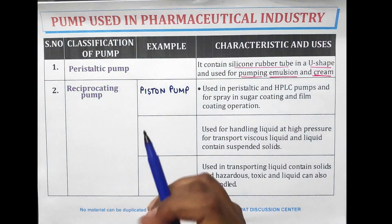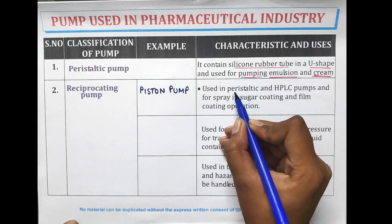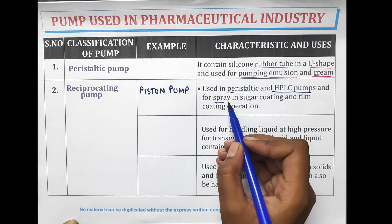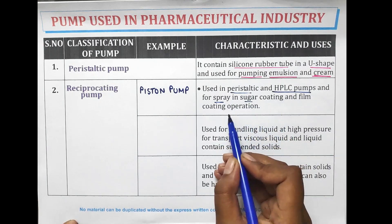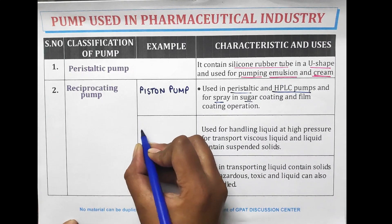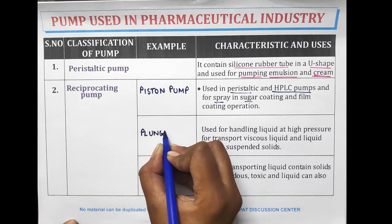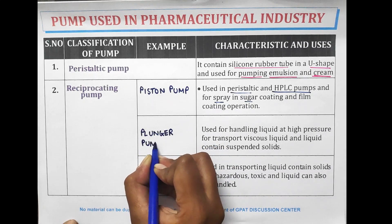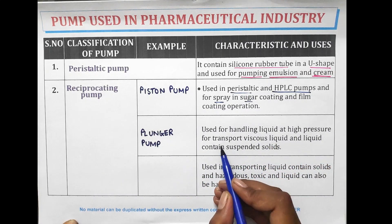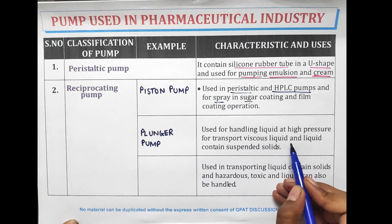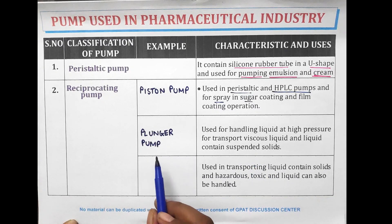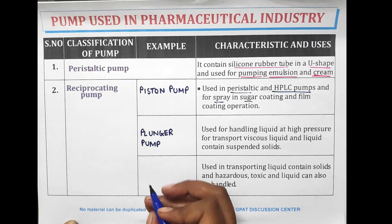The second type is the reciprocating pump. Examples include the piston pump, which is used in peristaltic and HPLC applications and for spraying coating solution in sugar coating and film coating operations. Another type in reciprocating pumps is the plunger pump, which is used for handling liquids at high pressure, for transport of viscous liquids, and liquids containing suspended solids.